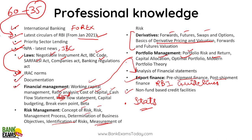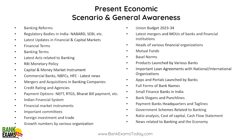This is the syllabus for the financial analyst. For present economic scenario and general awareness: banking and RBI circulars are important; banking reforms; regulatory bodies in India — NABARD, SEBI, RBI — whatever they are doing, their heads, and why they are in the news. Latest updates in financial and capital markets, financial terms, banking terms, latest acts related to banking, RBI monetary policy, capital and money market instruments. Sovereign gold bonds and sovereign green bonds are in the news — we are going to cover those.